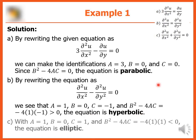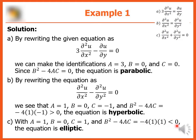For the last equation, a is one, b is zero, and c is one. Since b squared minus 4ac equals negative four times one times one, that is negative four, which is less than zero, therefore the equation is elliptic.